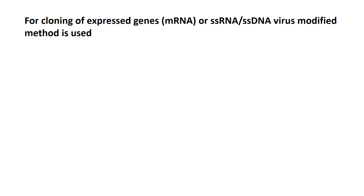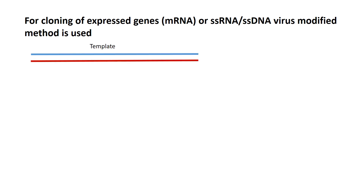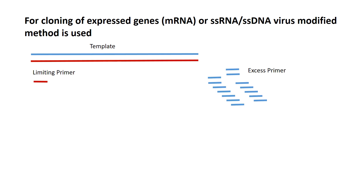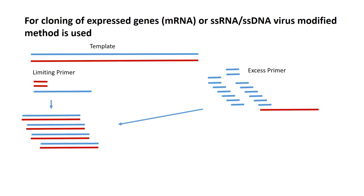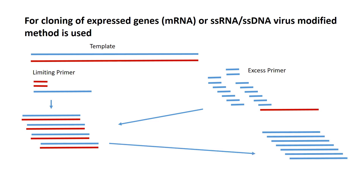A modified method of asymmetric PCR is used for these applications. Here you have a double-stranded DNA, one primer which is a limiting primer — which can be either forward or reverse — and an excess primer, which can also be either forward or reverse. When you set up the PCR, the limiting primer and the excess primer will both bind to the template and amplify the products.